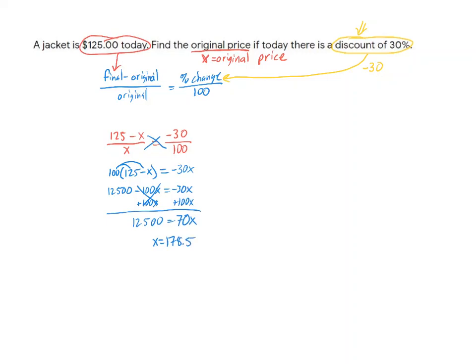And as a reminder, what is that X? X is the original price, and that's what the question was asking for. The original price is $178.57. There you go, no problem. That's how you work with percent change. All right, next.